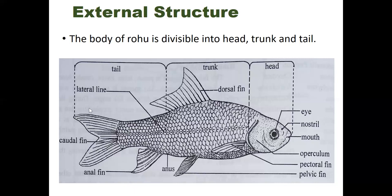The tail region is the posterior part of the body, extending from after the trunk to the caudal fin. This is the overall external structure of the Rui fish.